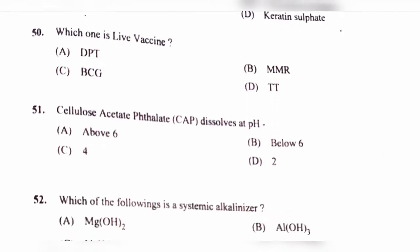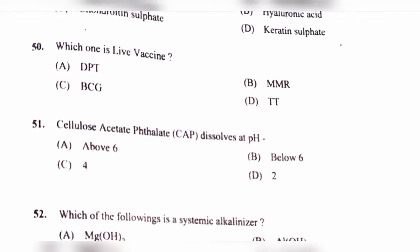Question number 51. Cellulose acetate phthalate (CAP) dissolves at pH: option A, Above 6; option B, Below 6; option C, 4; option D, 2. The correct answer is option A, Above 6. Cellulose acetate phthalate is used as a coating for enteric coated tablets.